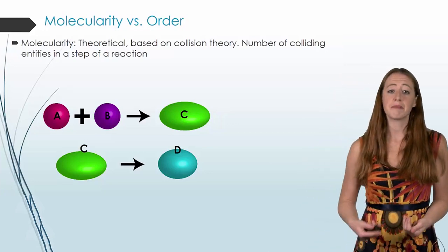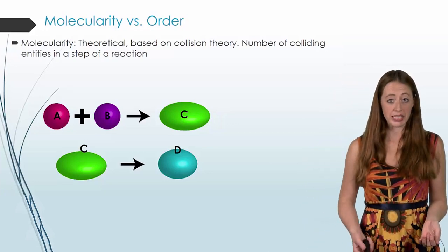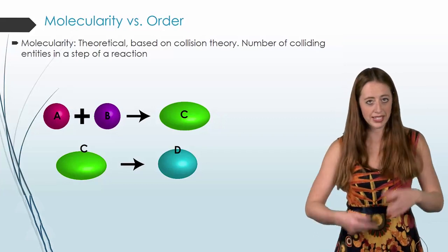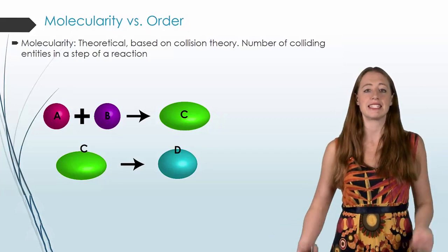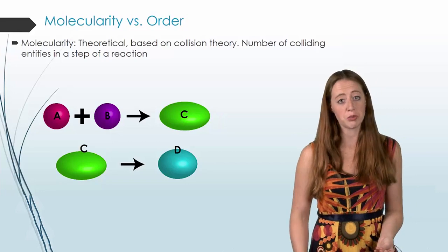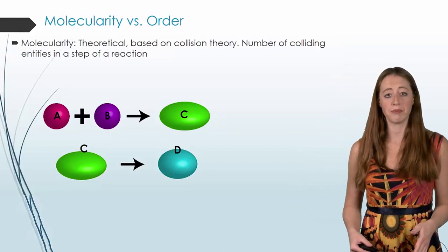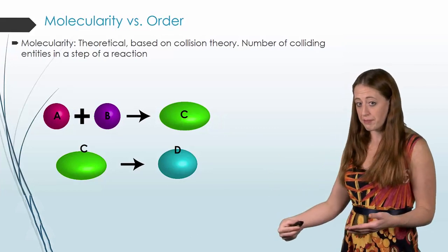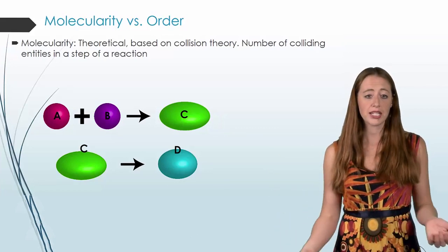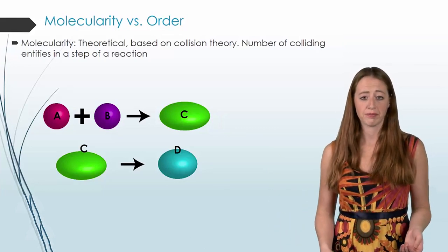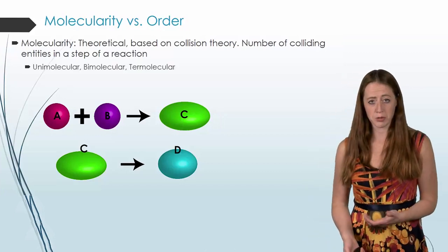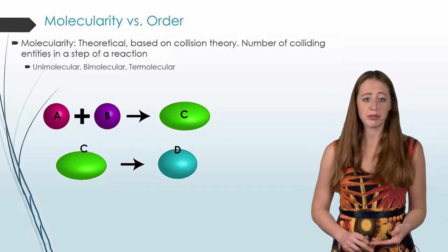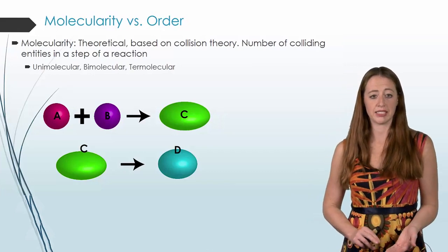So this is the number of colliding entities that would be required in a given step. Notice I don't say a given reaction, I say a given step. So we have multiple step reactions, which we've talked about. This would have a different molecularity for each step. So let's look at the examples I have here. We have three options that we're going to list here, which is unimolecular, bimolecular, termolecular.